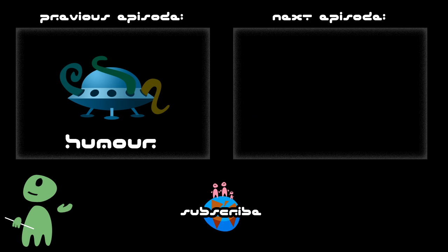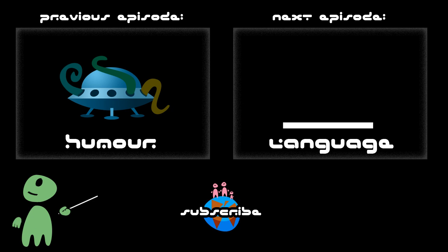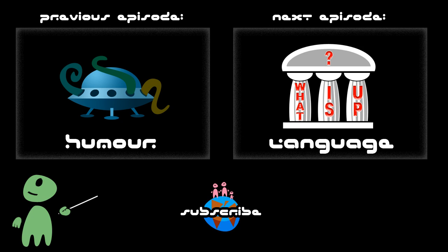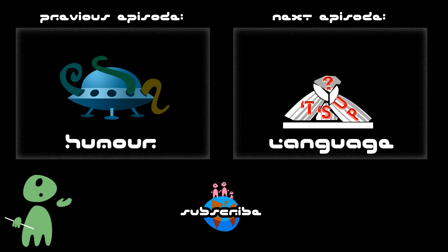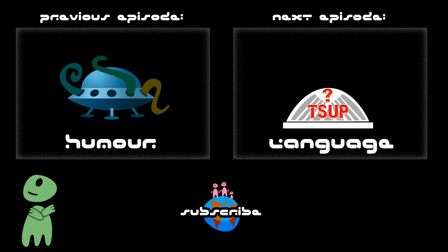This was the ninth episode of Earthlings 101. Next time we'll talk about language, how it works, how it developed, and why the causes of its apparent decline are actually the very forces that build it. Thanks for watching, and as always, don't forget to be alien.